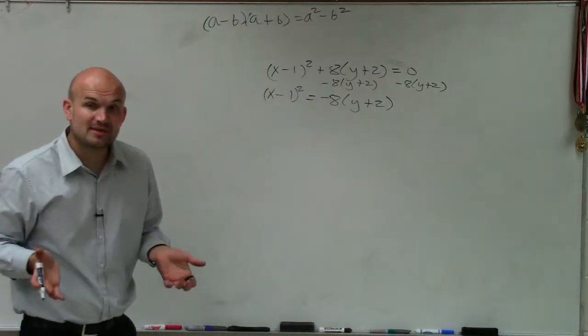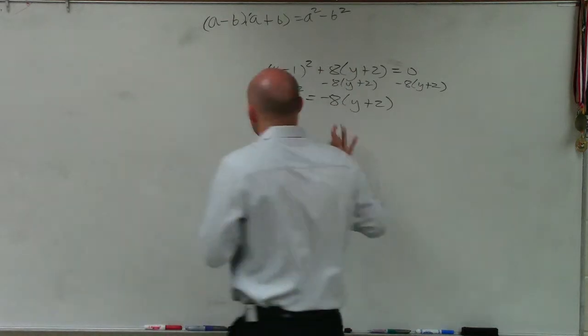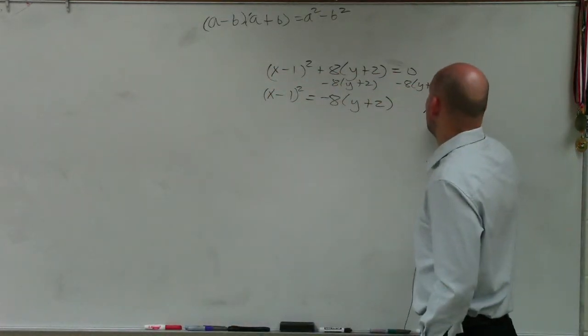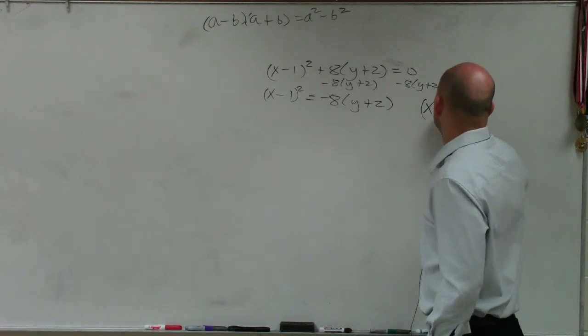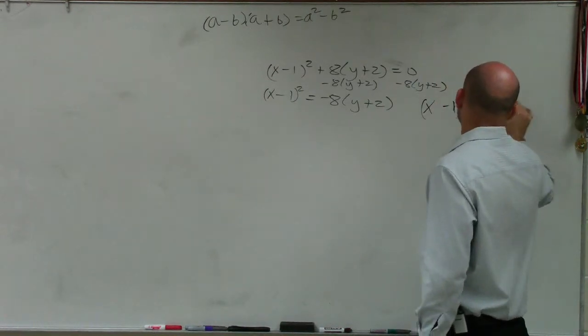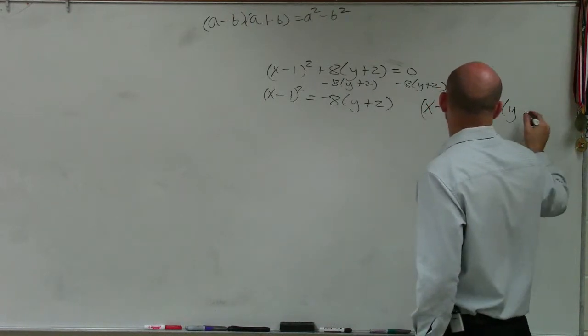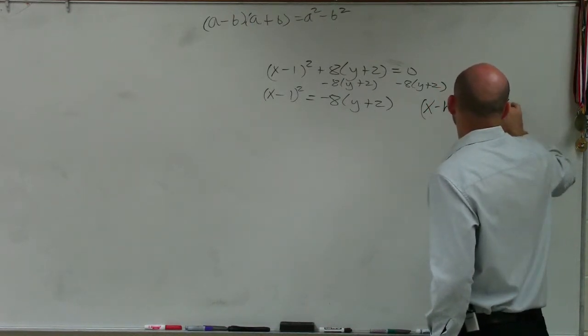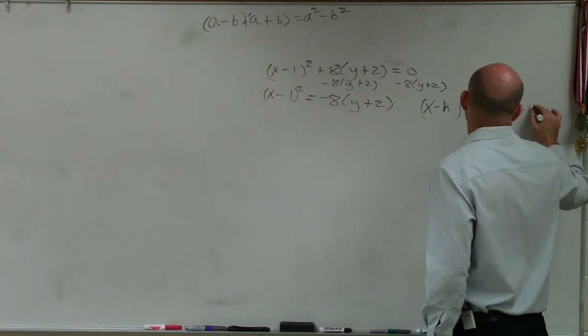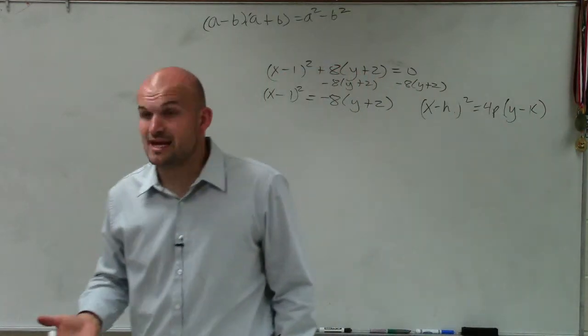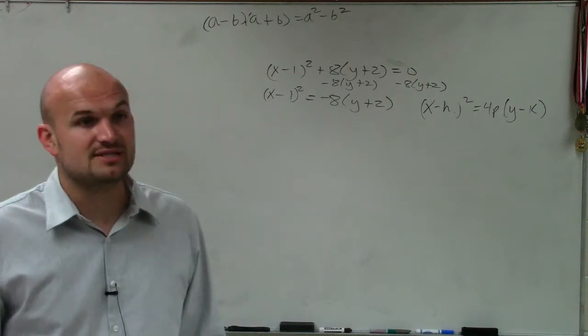Now this is great because I remember in the format that we talked about that looked like this, I had an equation that was in this format: x minus h squared equals 4p times y minus k. That was the general standard form that I gave you guys to talk about when doing these types of problems.